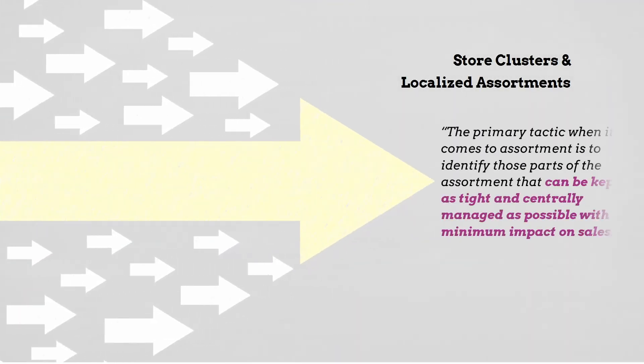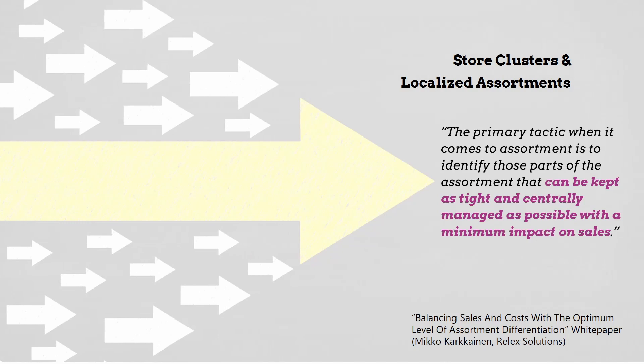I love this quote: the primary tactic when it comes to assortment is to identify those parts that can be kept as tight and centrally managed as possible with a minimum impact on sales. Relics Solutions is an organization that provides assortment and space planning tools to retail and CPG, and they've shared some perspective on making strategic choices about when you should even think about store clusters and localized assortments at retail.